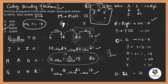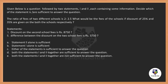Now let's move to the next question from the Data Sufficiency topic. We need to find whether the given data is sufficient to answer or not. The question says: the ratio of fees of two different schools is 2:2.5. What would be the fee of both schools if discounts of 25% and 35% are given on the two schools respectively?